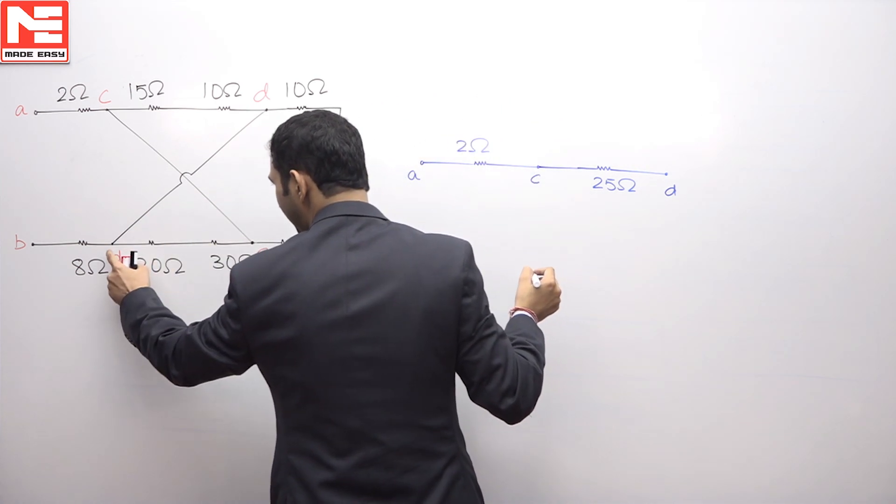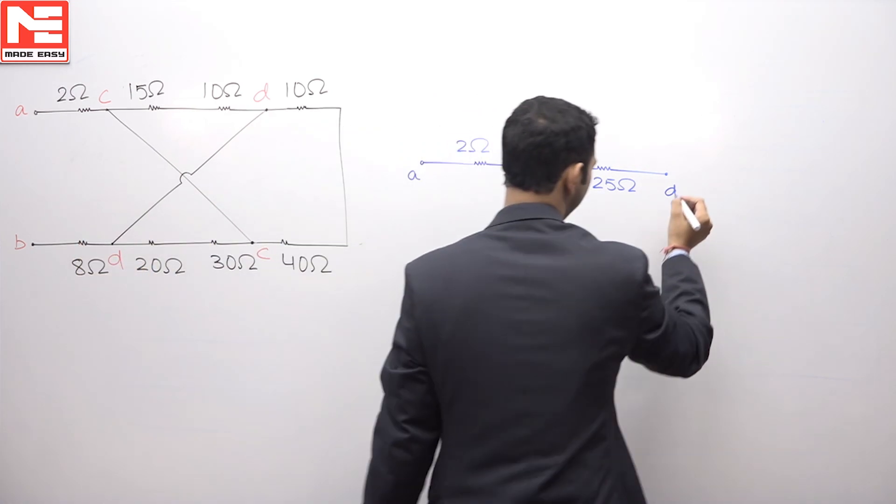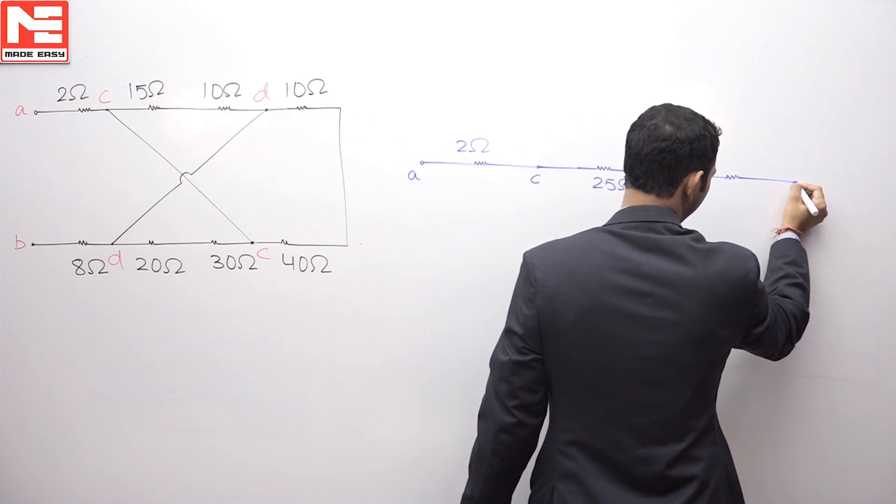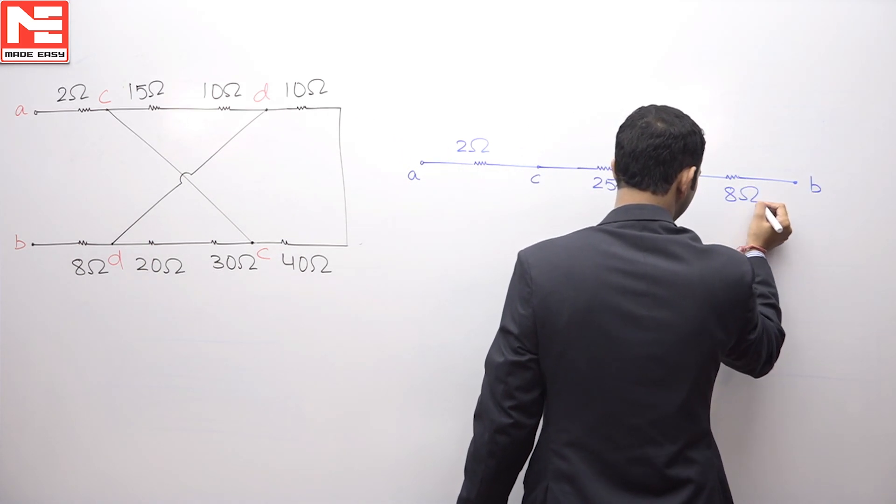Then this is same point D, between D and B, 8 ohm is connected. So between D and B, 8 ohm is connected.